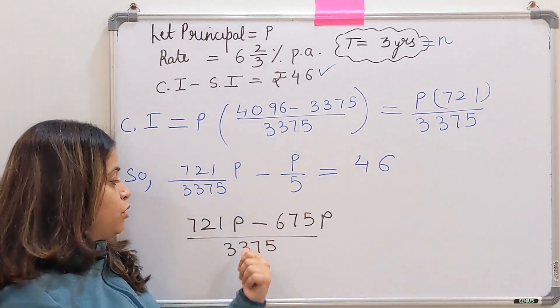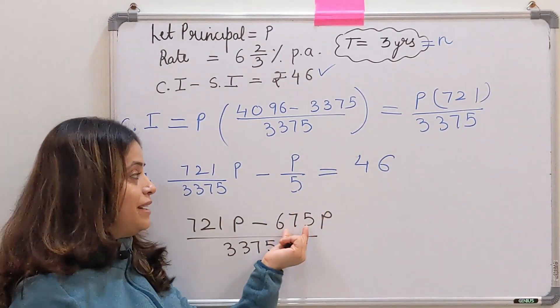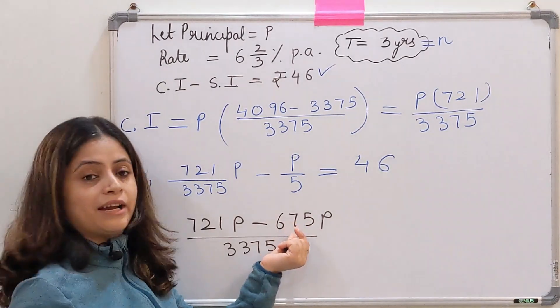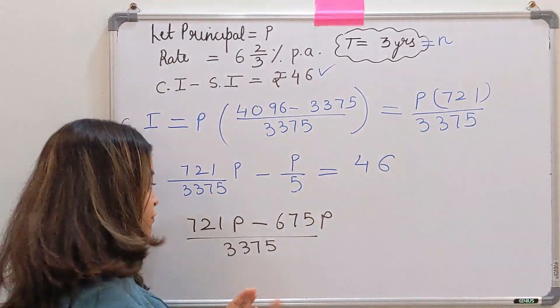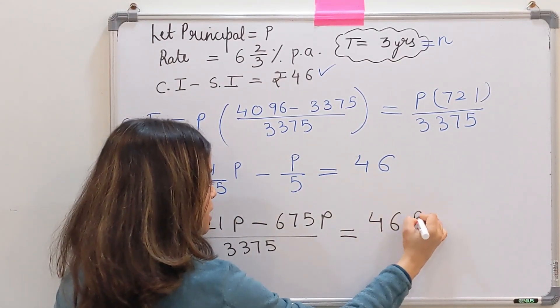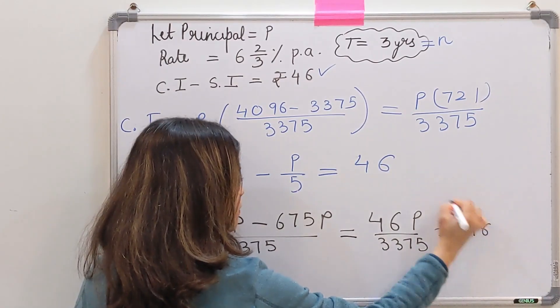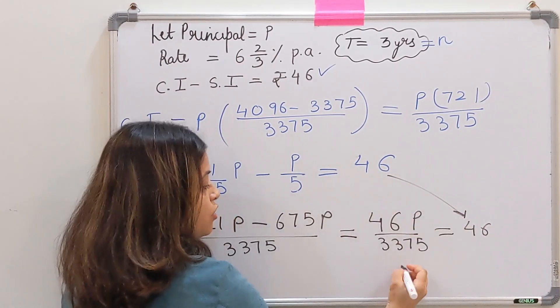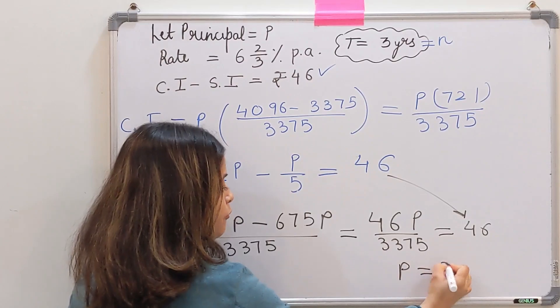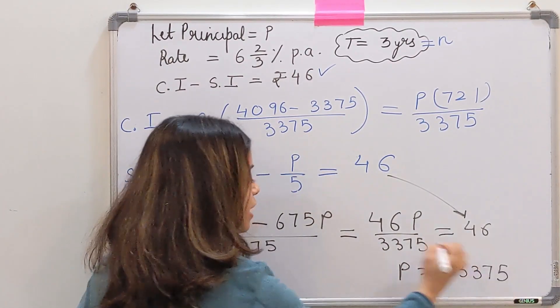Subtracting gives 46P/3375 = 46. Cross multiplication gives P = 3375. So we got our sum as Rs 3375. When the difference is known and we have to find the sum, remember that the sum refers to the principal.